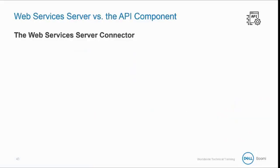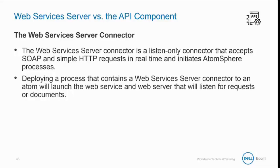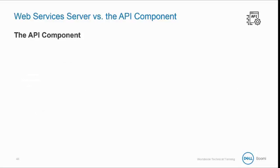What is the difference between the web services server, which we already worked with, and the API component? The web services server connector is a listen-only connector that accepts SOAP and simple HTTP requests in real-time and initiates AtomSphere processes. Deploying a process that contains a web services server connector to an Atom will launch the web service and the web server that will listen for requests or documents. This is the simplest, default method of deploying a web service, and it can be used stand-alone without using the API component.